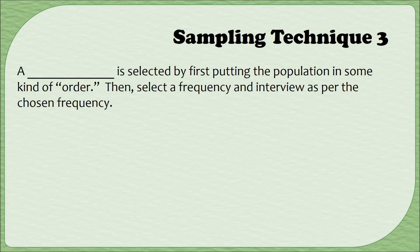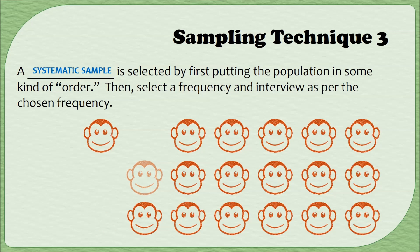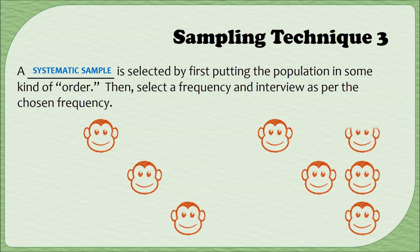The third sampling technique is called a systematic sample. It happens when you put your population in some kind of order — you have a list of everybody — then select a frequency and interview according to that frequency. As a visualization, imagine a population of tagged monkeys in a forest listed by ID number. You pick every fourth monkey on the list, going through the entire list. This is your systematic sample. The monkeys selected fall on a diagonal pattern, making it somewhat random but not fully random.